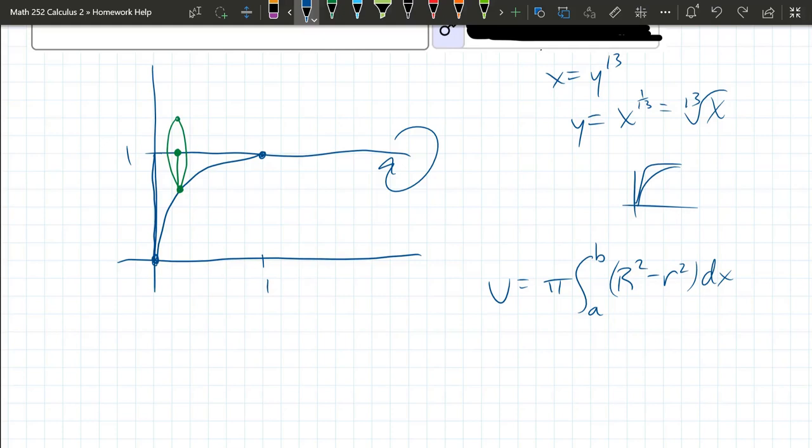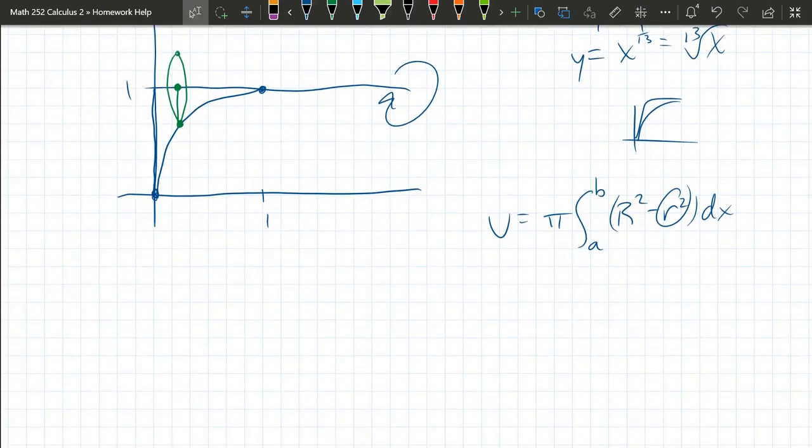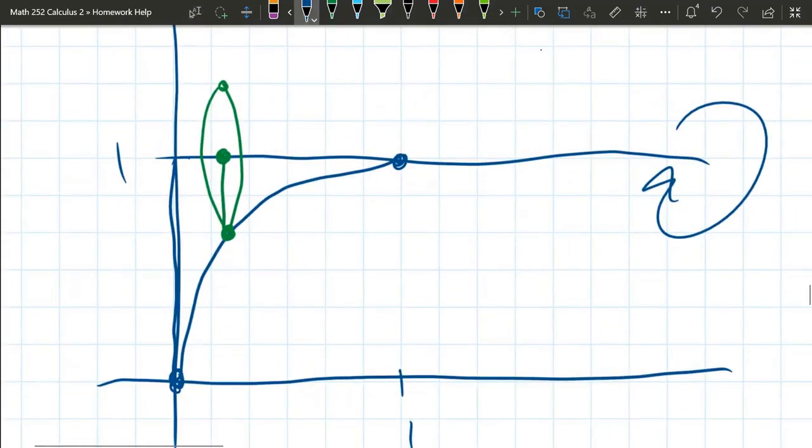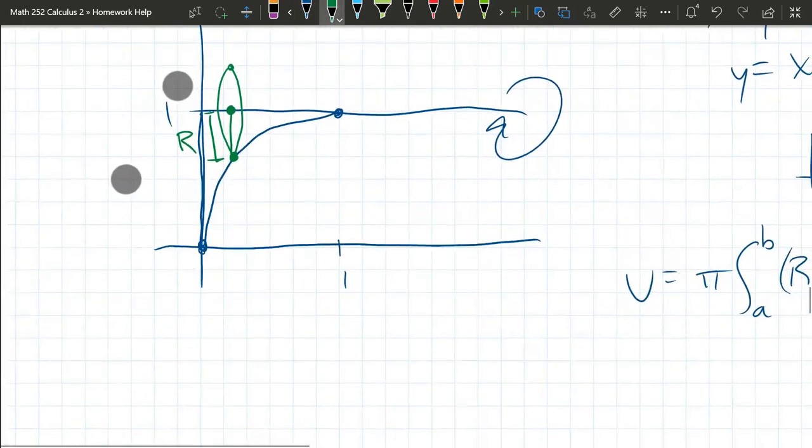All right, our region here is solid. There is no hole in the center. So little r is going to be 0, or you could just ignore it. What about big R? So big R is this distance here. It's a function of x.